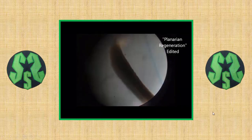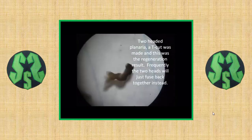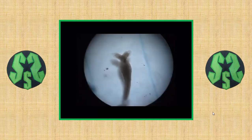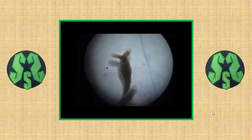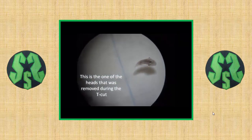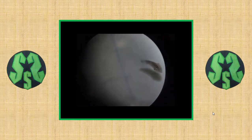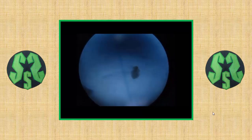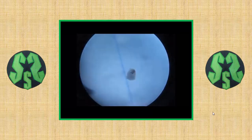Here's a clip about planarians. The planarian worm was sliced from head toward tail but not completely, so now it has two heads growing out of it. Here's one that has separated itself into a completely new organism — this one looks kind of cute, like a Pac-Man ghost.